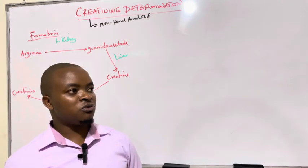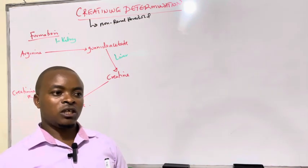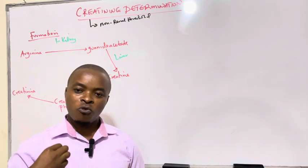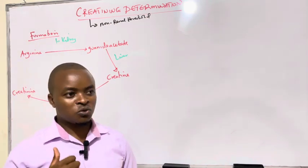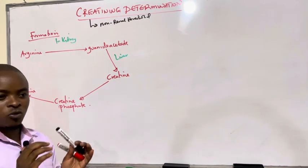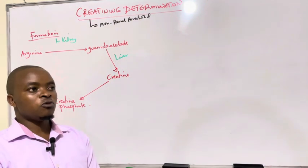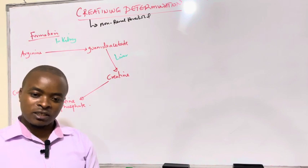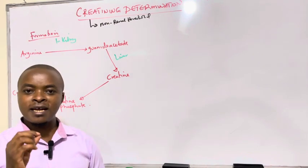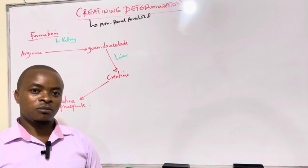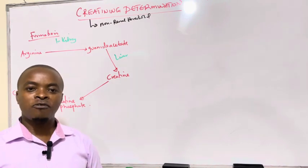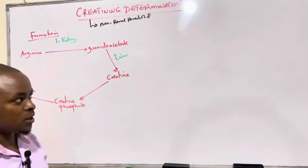The one which we use exogenously is inulin, but in our body we have creatinine. This creatinine is not reabsorbed, so whenever we filter it, it is the same amount we excrete in urine. So it is a non-renal threshold substance, neither secreted nor reabsorbed via the renal tubules.